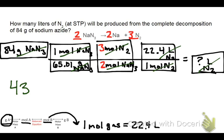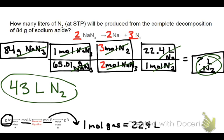And the calculator says this should be about 43. If we round to two sig figs, and our units, of course, have to be liters of nitrogen. So we were able to figure out that 84 grams of sodium azide would give us 43 liters of nitrogen as long as it's at STP.